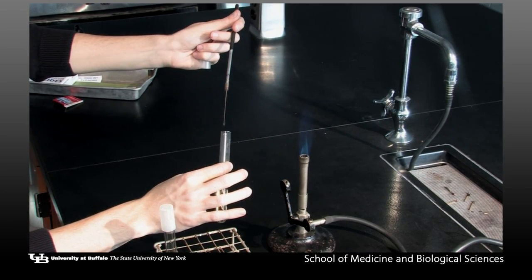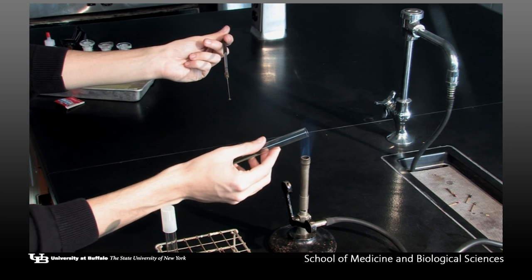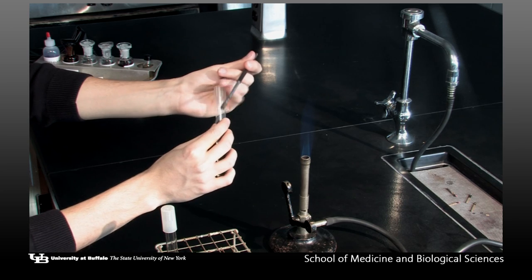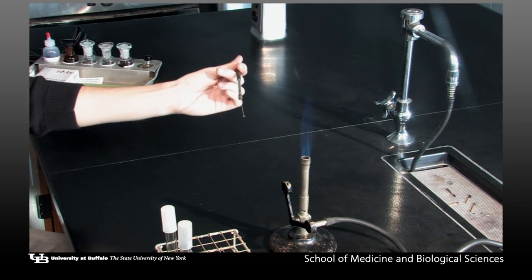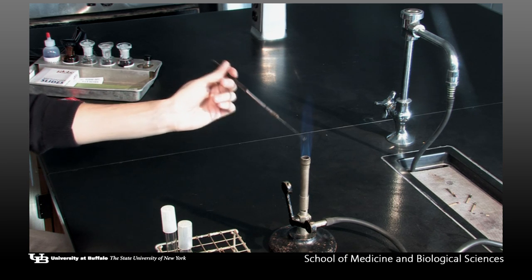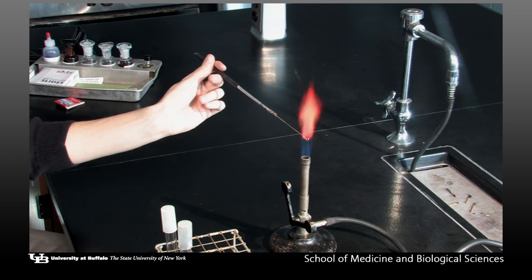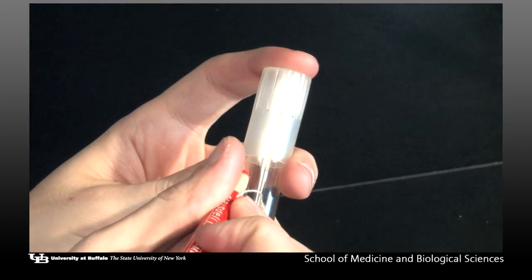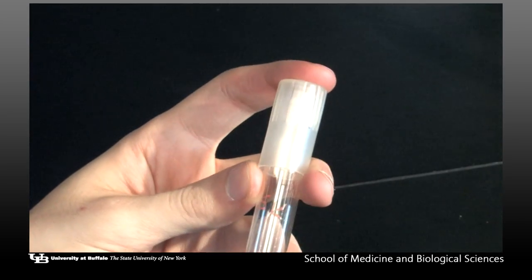Gently swirl the loop in the broth. Withdraw the tube from the inoculating loop. Flame the mouth of the tube as before and replace its cap. Sterilize the loop as before by heating it in the Bunsen burner flame. It is especially important to flame the entire wire loop due to the bacterial contamination. Label the tube with your initials and incubate the culture for the appropriate temperature and time.